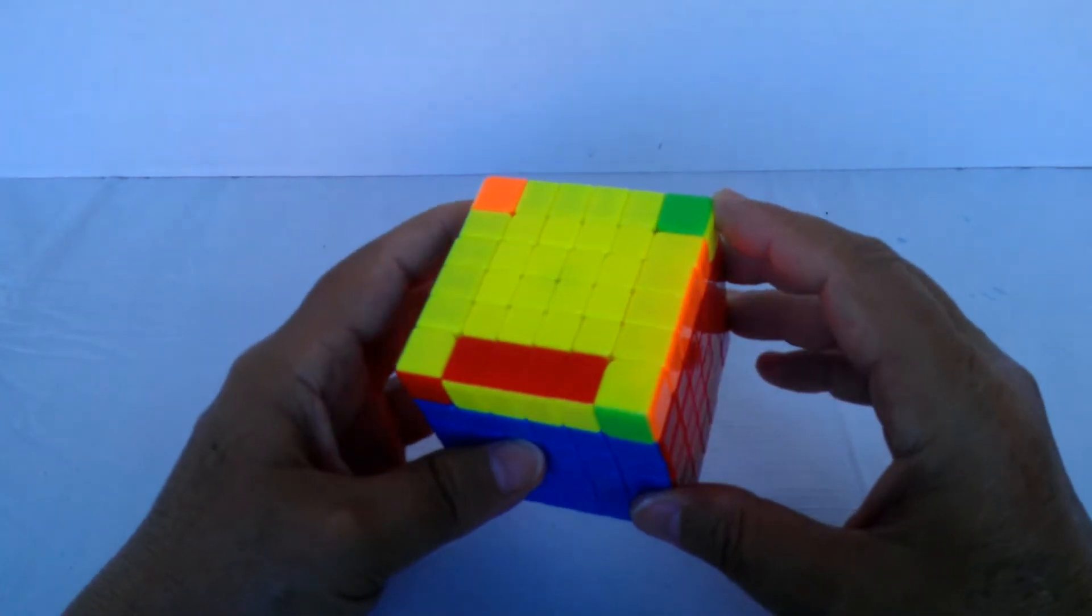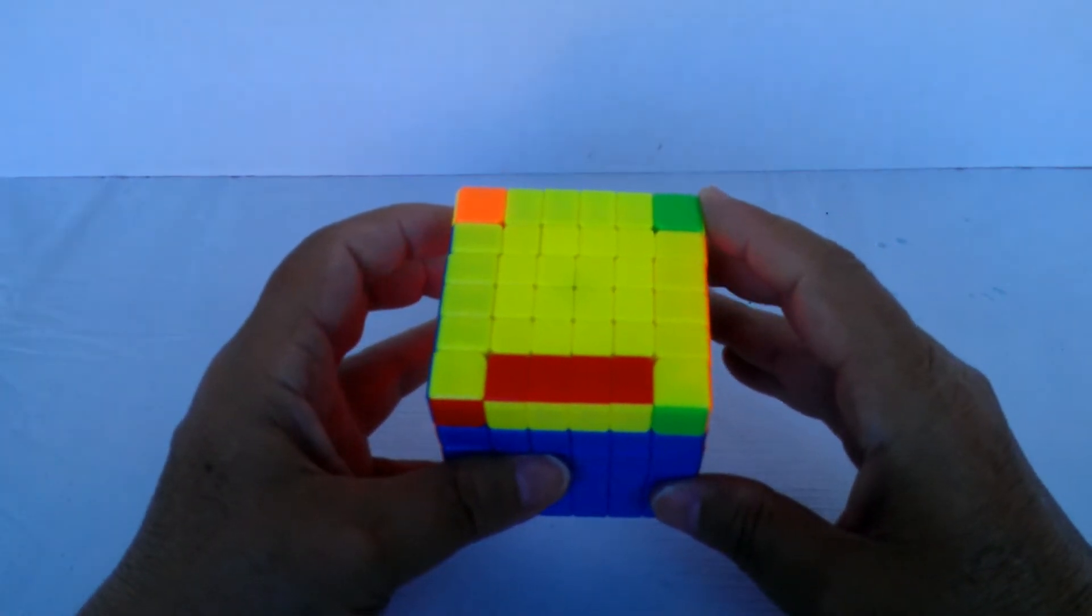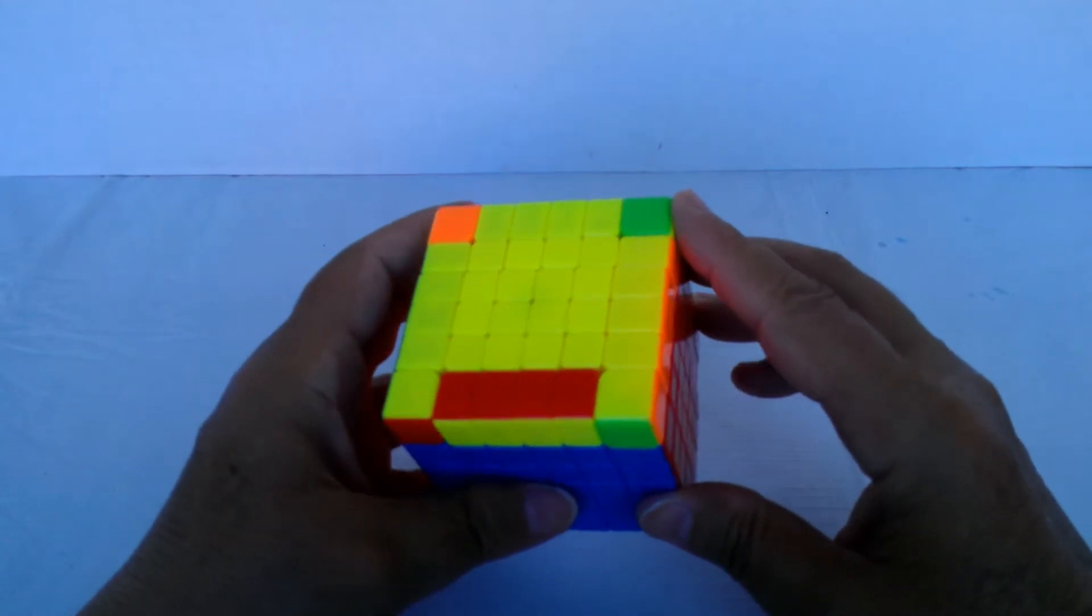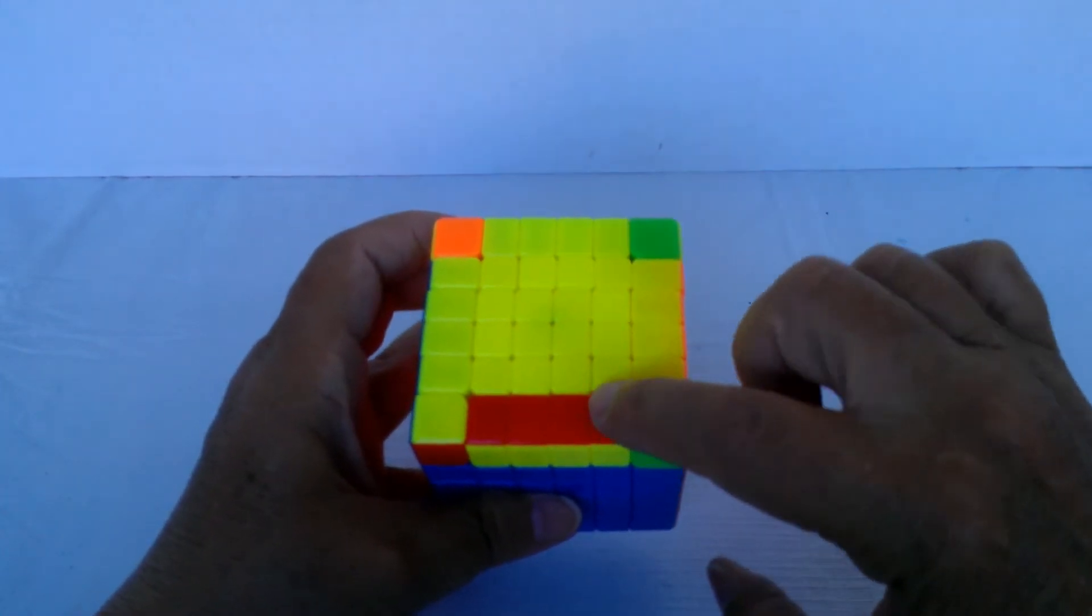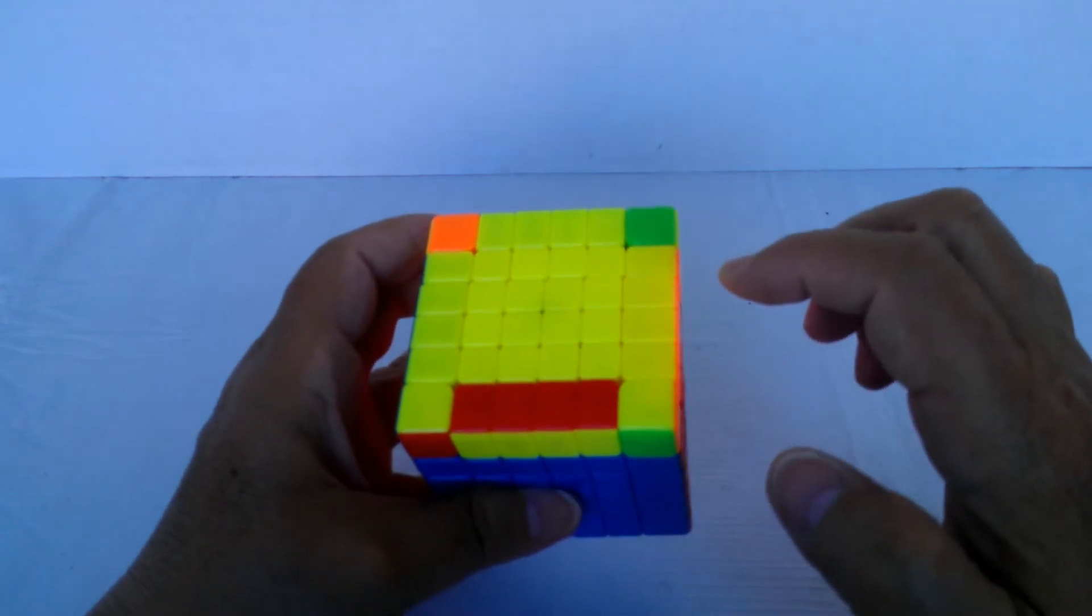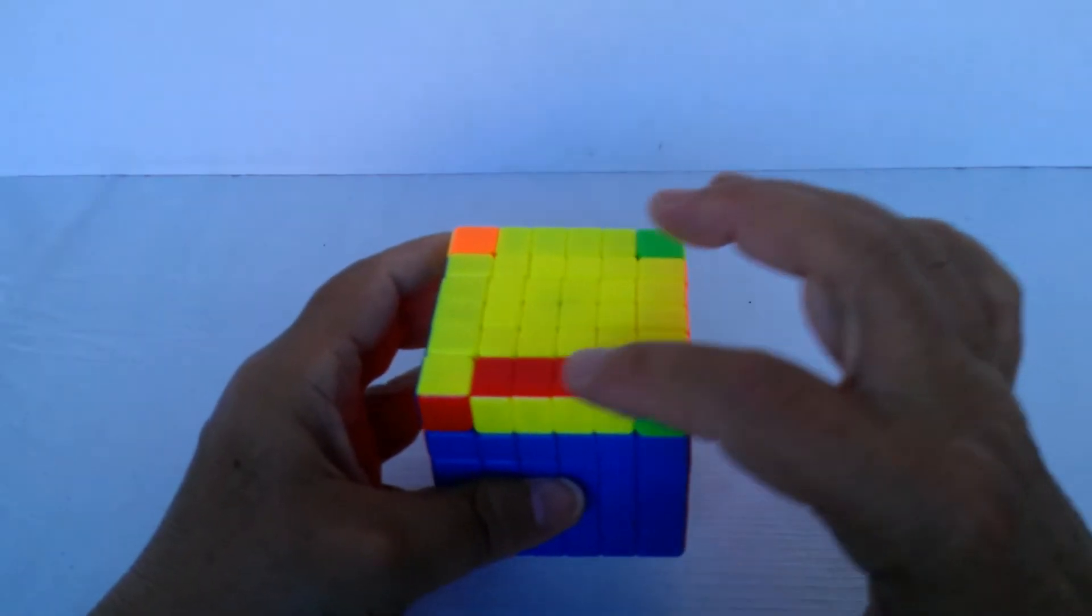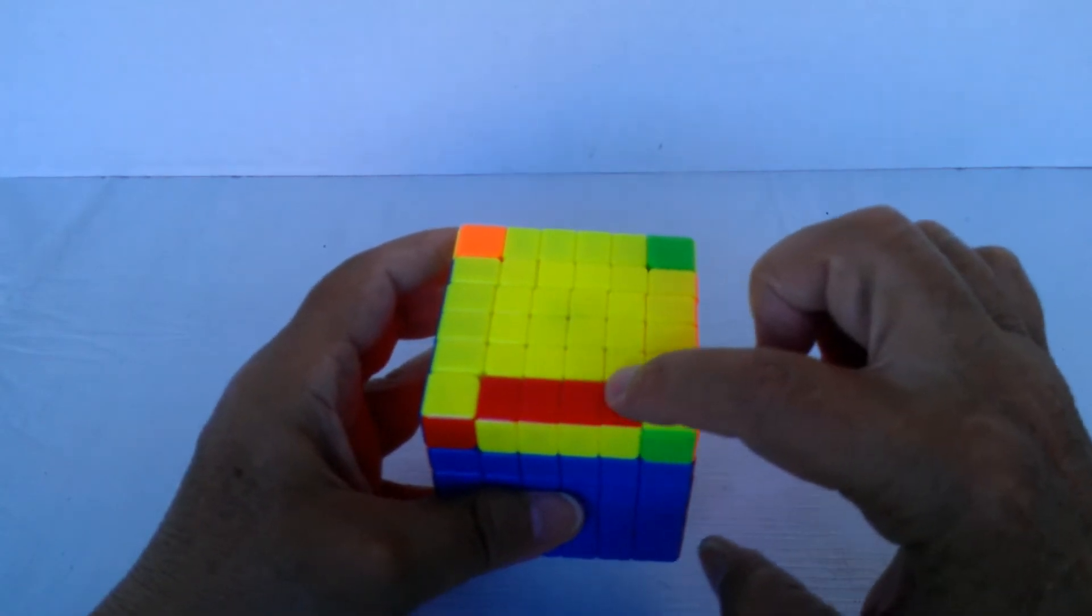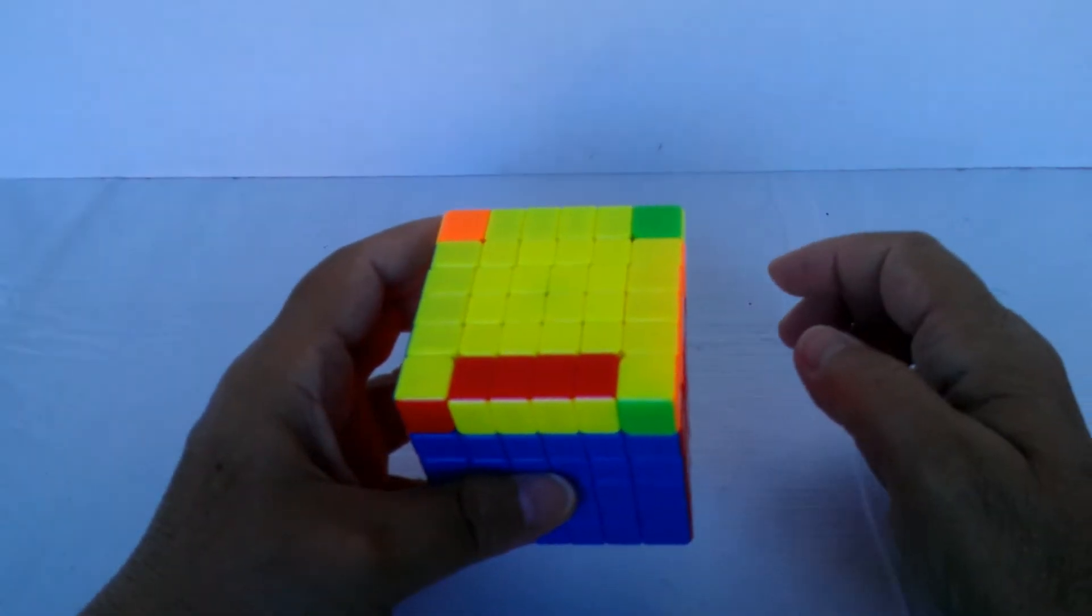It's a 15-move algorithm. I've memorized it in three chunks of five. On the 4x4 you're only moving one layer, this inside layer, for the most part, but since this is a larger cube you're actually going to be moving both of these at the same time.